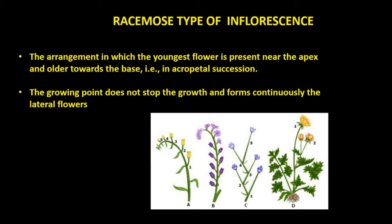First, the racimose type of inflorescence. In the racimose type, the arrangement is such that the youngest flower is present near the apex of the floral axis, and older flowers are towards the base, in an acropetal succession. The floral axis, which we call the peduncle, continues to grow and does not stop while forming flowers, and the lateral flowers are gradually formed.